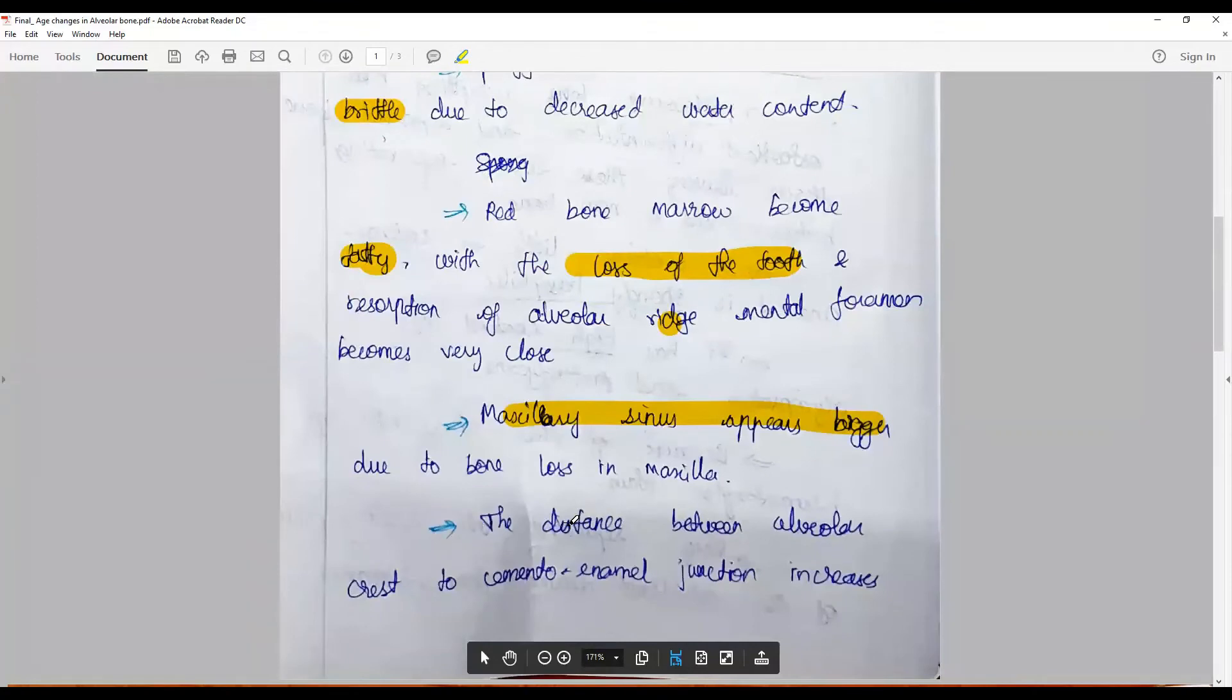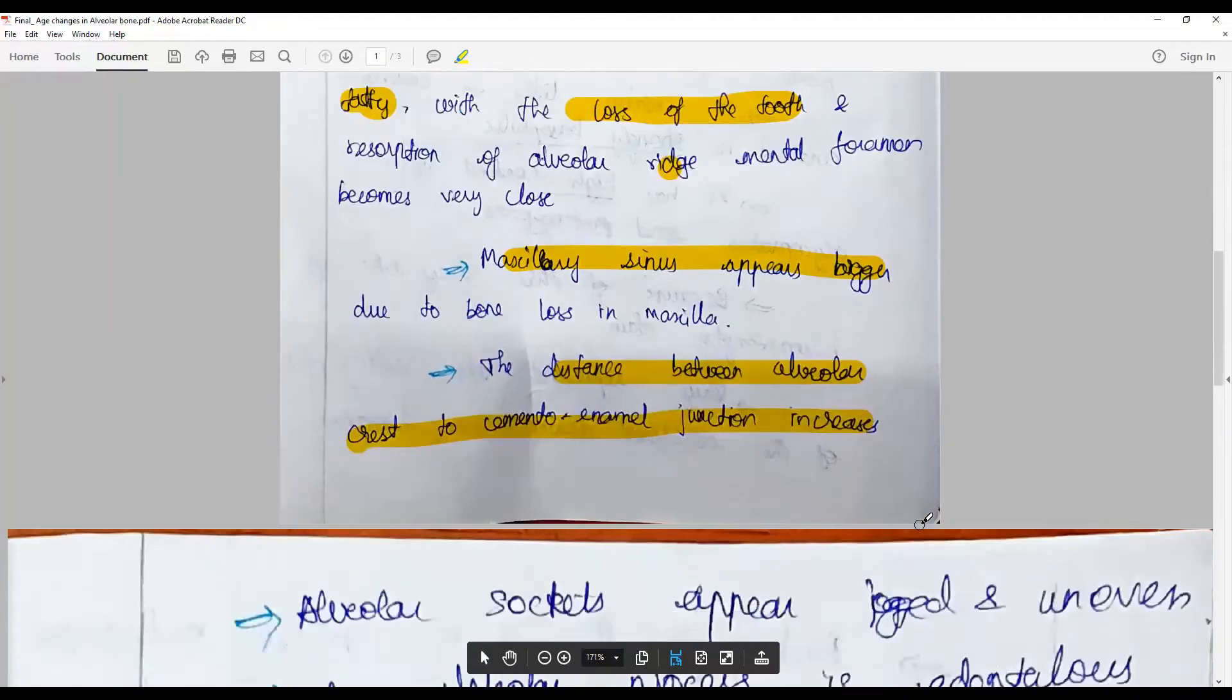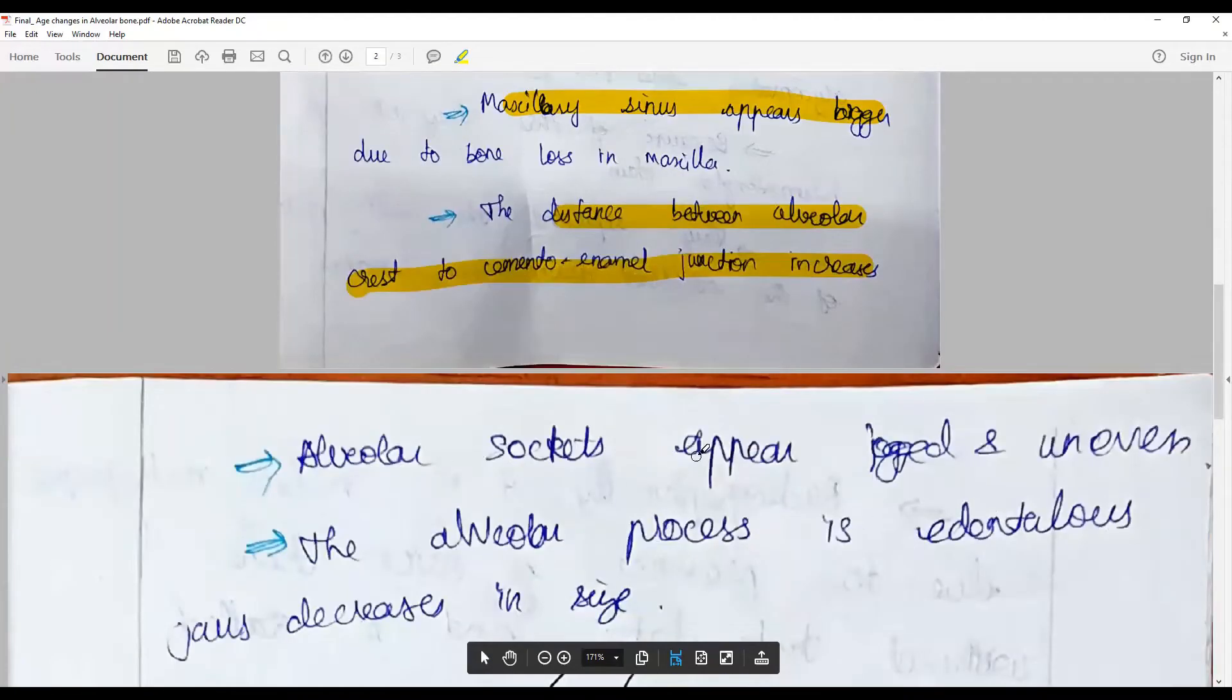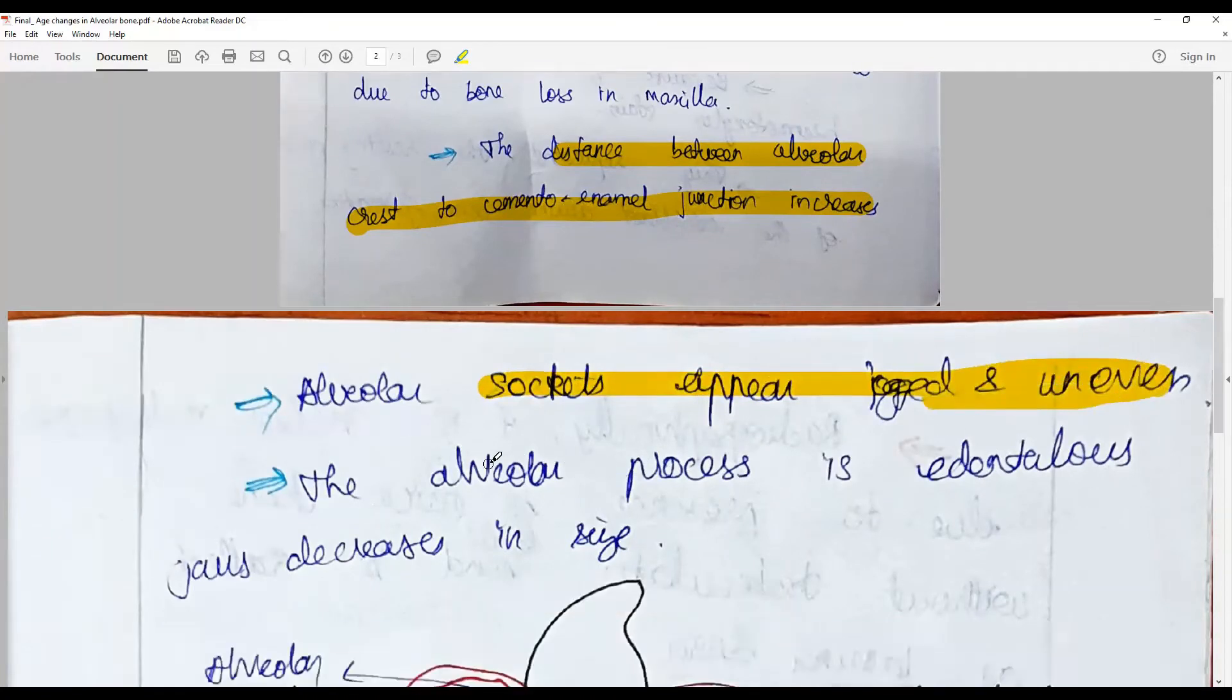And the distance between the alveolar crest to the cementoenamel junction increases. Socket because of irregular deposition may become uneven, and if edentulous there is a loss of tooth, the alveolar process may decrease in size.